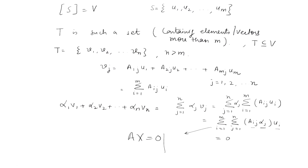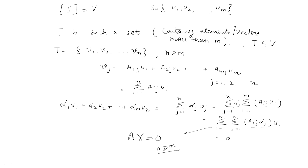For this system, the number of unknowns is n (j varying from 1 to n) and the number of equations is m, and since n > m, the system will have infinitely many solutions. This means there will be some non-zero solution also. So we have shown that the set of vectors {v₁, v₂, ..., vₙ} of T are linearly dependent, confirming that any linearly independent set in V has no more than m elements.